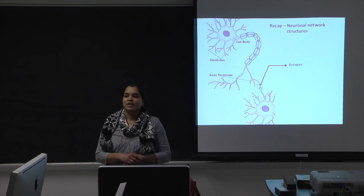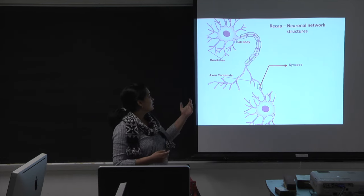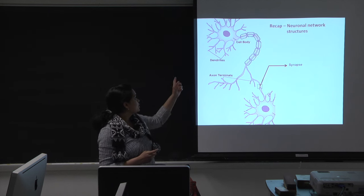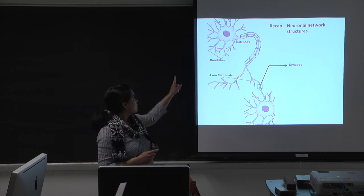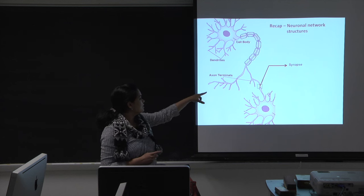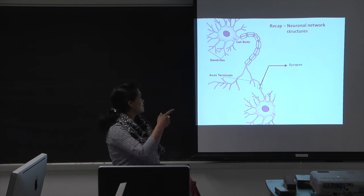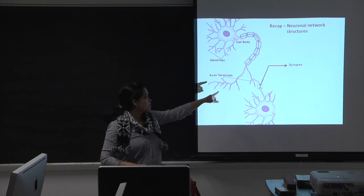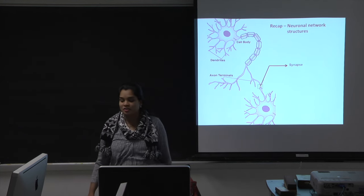Just a quick recap of the network structures I was looking at. In this slide, I'm showing you two neurons, each having a cell body with the dendrites, and then the single axon from cell one terminating at a dendrite on cell number two. You see the cell body, dendrites, axon terminals, and the synapse formed between the axon terminal and the dendrite of the neighboring neuron.